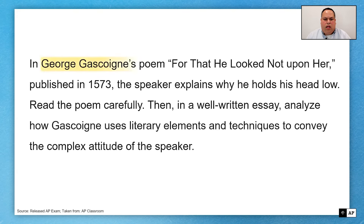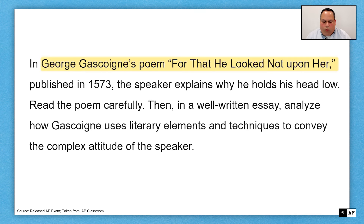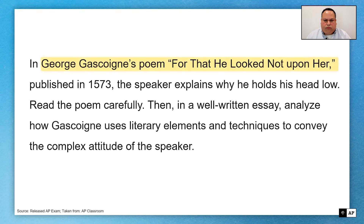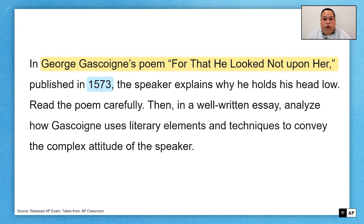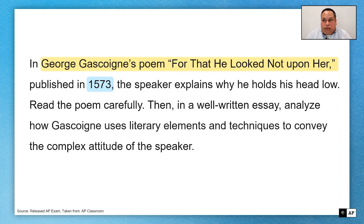There are a few things that are always given to us. We're going to get the title of the work and the poet or the writer. You may not know the work or the writer, but you still want to start thinking about the title — 'For That He Looked Not Upon Her.' What is that telling us? What is that making us think about? We're also told the year in which it was published: 1573. This is a filter through which we'll process the entire poem. We're talking about the 16th century — Shakespearean times. What do we know about social hierarchy, the way people behaved, what people knew about the world, history, and society? All these things will inform our reading.